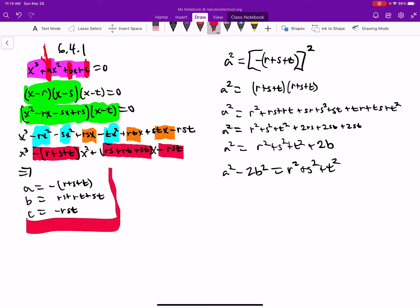So from there, I'm thinking, how do we get the r squared plus s squared plus t squared? Well, I looked here, and I thought if I square that, that'll at least get us an r squared, s squared, and a t squared. So I squared a here.